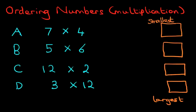And there we have it. We've got A, B, C, D on the left. Each of those are multiplication problems. And on the right-hand side, we have to order them so that the smallest is at the top and the largest is at the bottom. So how do we do this?